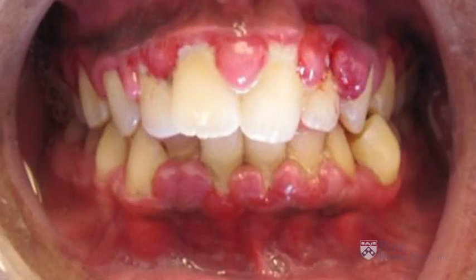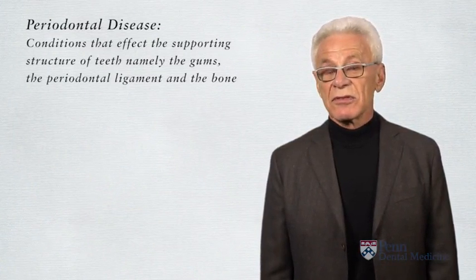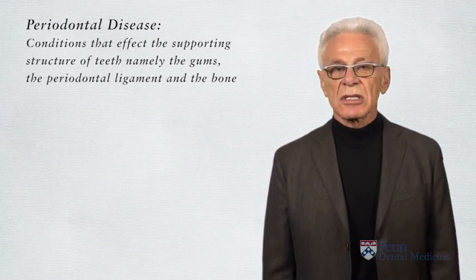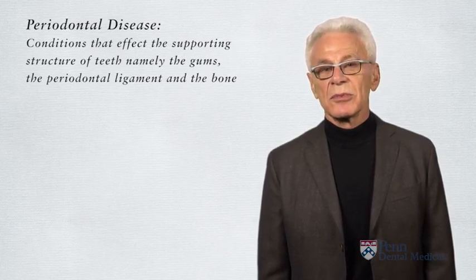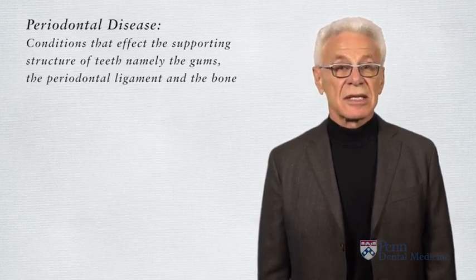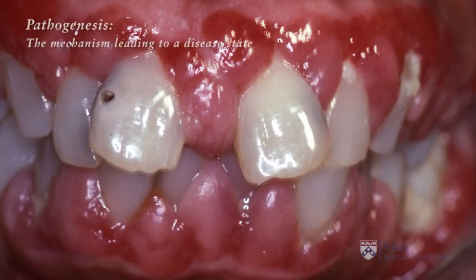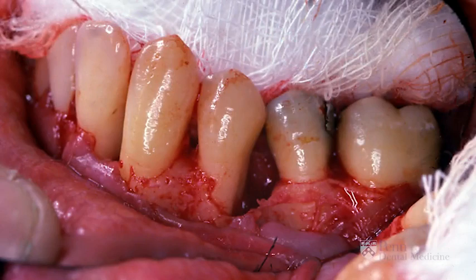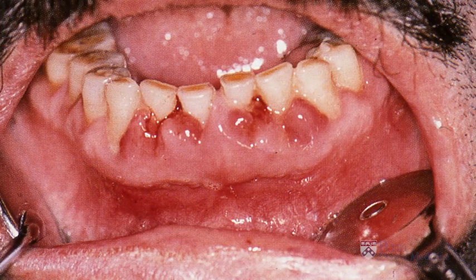The second entity we will be addressing is periodontal disease, also commonly referred to as gum disease. Periodontal disease is actually a collective name for different conditions affecting the supporting structures of teeth, namely the gums, the periodontal ligament, and the bone. Its pathogenesis will be discussed in subsequent lectures, but it is caused by certain pathogenic oral bacteria, which through direct effect or via provoking host immune response leads to inflammation and subsequent destruction of the periodontium.